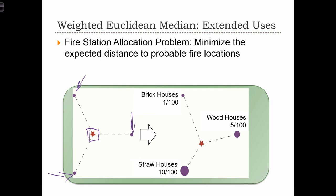However, let's take into consideration the fact that straw houses will burn at a rate of ten fires for every 100 houses, wood houses will burn at a rate of five fires for every 100 houses, and only one in 100 brick houses have fires.